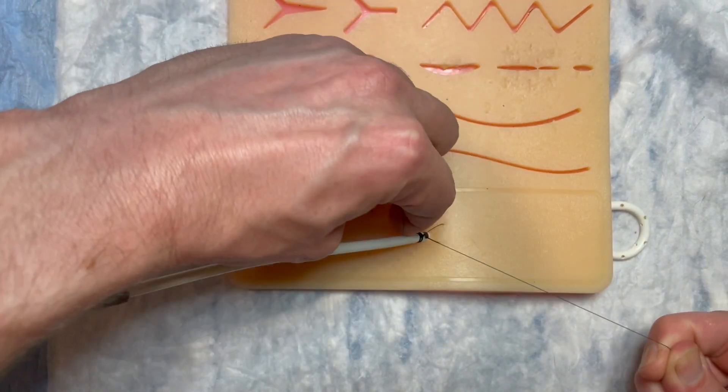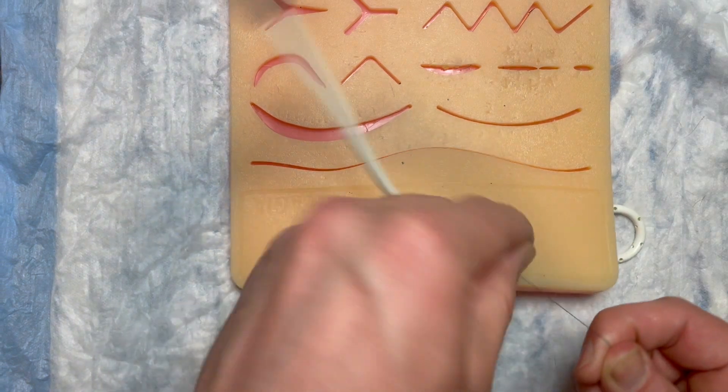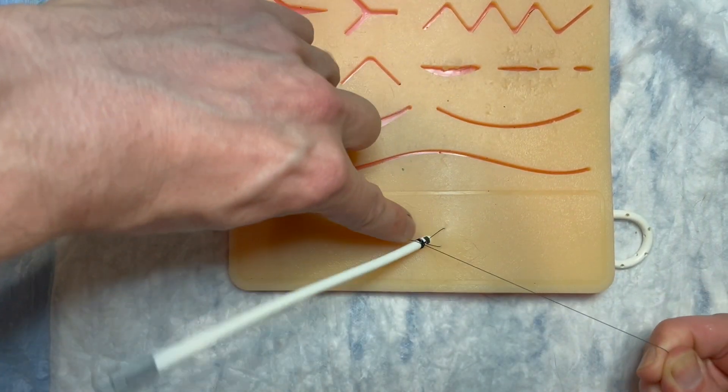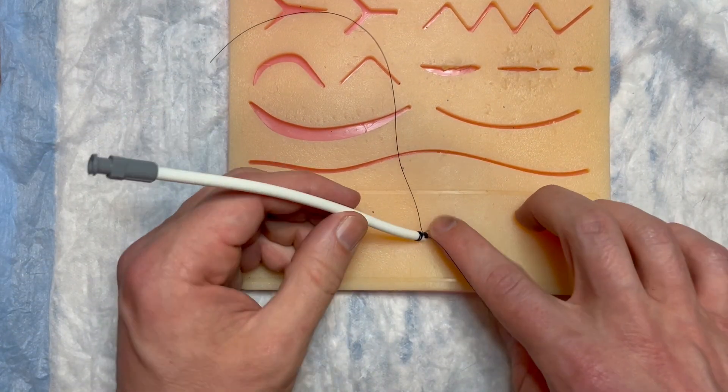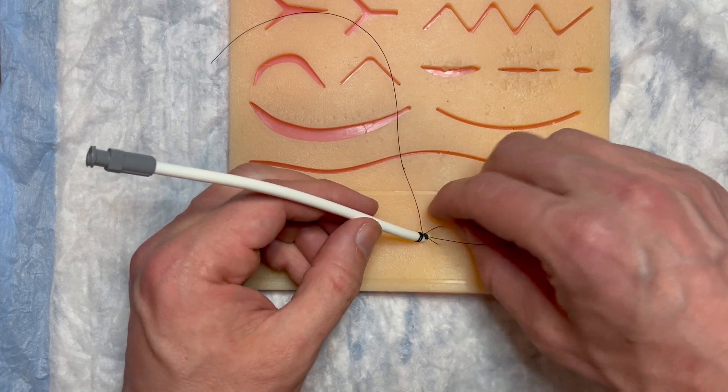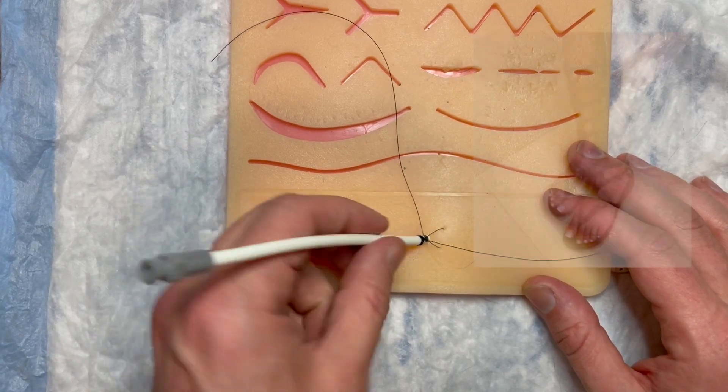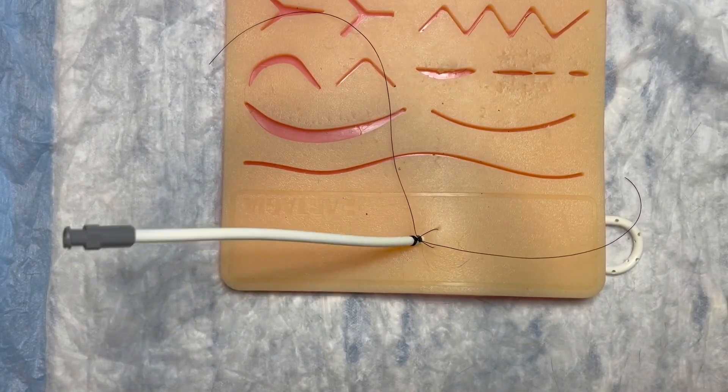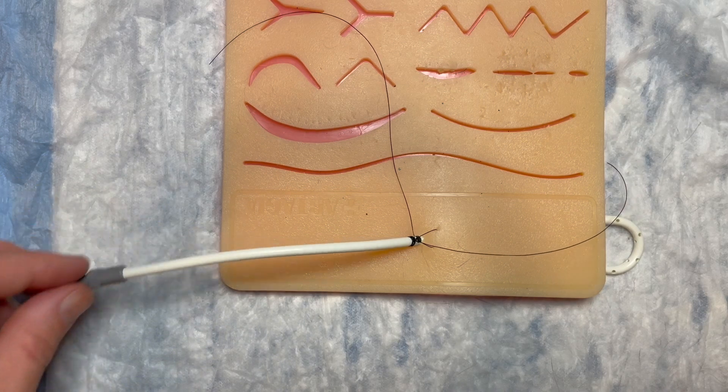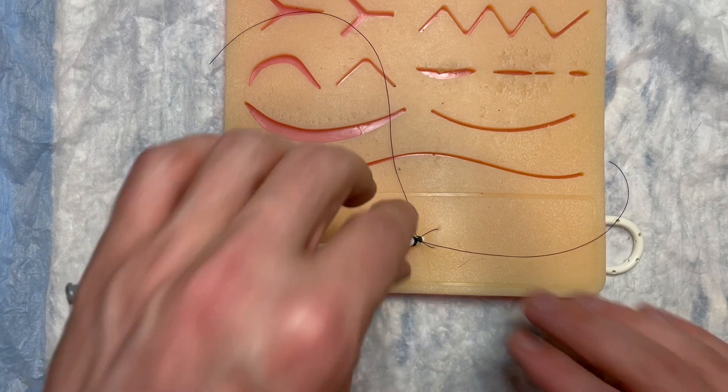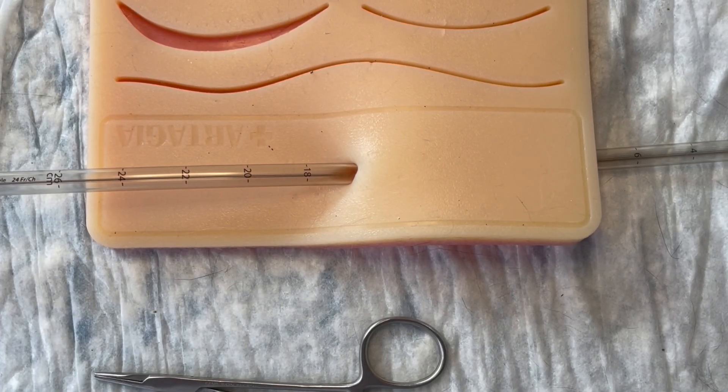And do a few throws there and my final one here. And boom, so I've got a nice little air knot here that's not going to cause any necrosis of the skin and look how secure this is with no Roman sandal technique. So that is how you secure a pigtail catheter, it's not going anywhere.